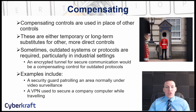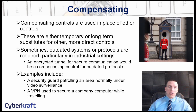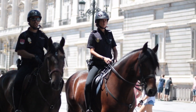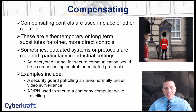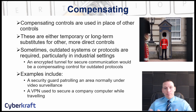Compensating controls are used in place of other controls when a normally used control can't be put in place. For example, if camera coverage around your facility is lost due to wear, tear, or a storm, you can have guard patrols to compensate — guards view the areas normally under video surveillance. Guards are versatile: if there's a breach in a fence line, station a guard there; if an RFID badge system breaks, have a guard and a sign-in sheet.